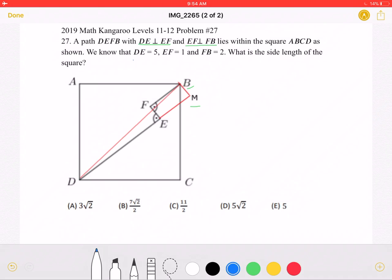We know that DE is equal to 5, EF is equal to 1, and FB is equal to 2.